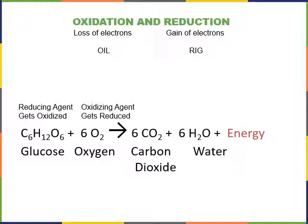Energy is never created or destroyed, so the chemical energy stored in glucose is released during this reaction. It is possible to perform this reaction by lighting glucose on fire in the presence of oxygen. This is a combustion reaction that will convert glucose and oxygen to carbon dioxide and water, releasing energy as heat and light. Most organisms oxidize glucose slowly in many small steps, storing some of the energy that is released by producing another chemical called adenosine triphosphate, or ATP.